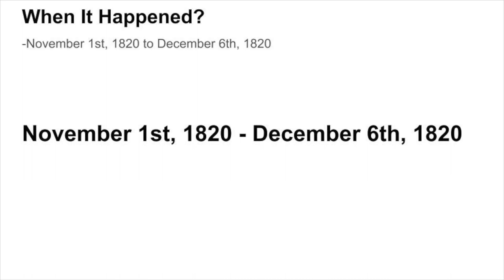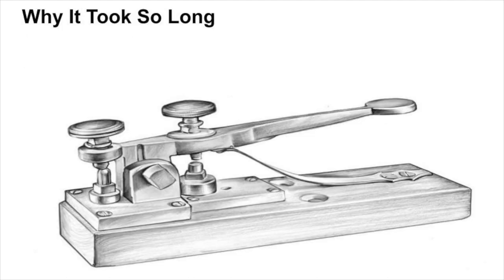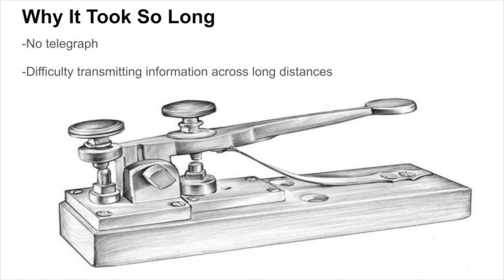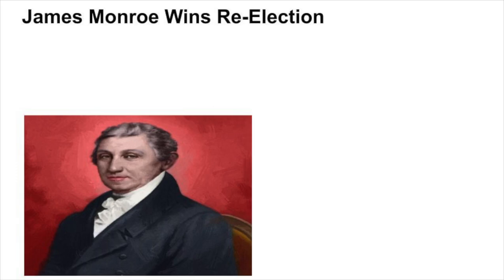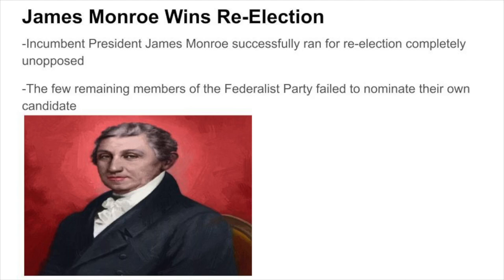The ninth presidential election in American history took place from November 1st, 1820 to December 6th, 1820, spanning over the course of 35 consecutive days. Similar to the previous presidential elections, the telegraph was still not invented yet, which made it difficult to transmit information across the country effectively. The ninth presidential election saw incumbent president James Monroe successfully run for re-election completely unopposed, with the few remaining members of the Federalist Party failing to nominate their own candidate.